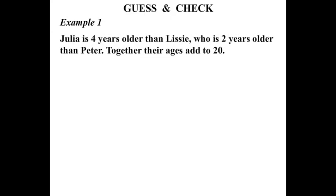Julia is 4 years older than Lissy, who is 2 years older than Peter. Together their ages add to 20. We are asked to find the age of each person.